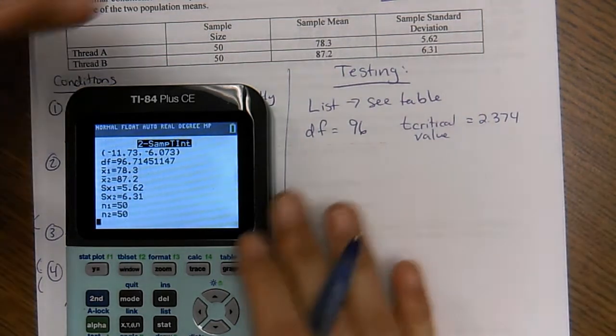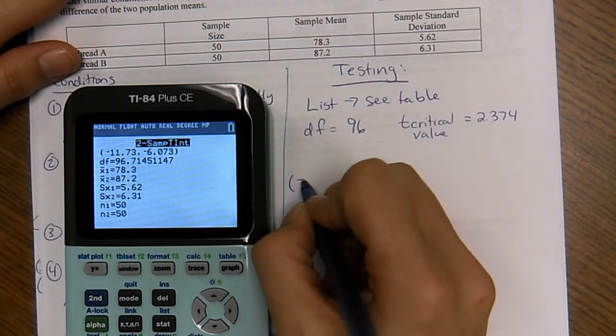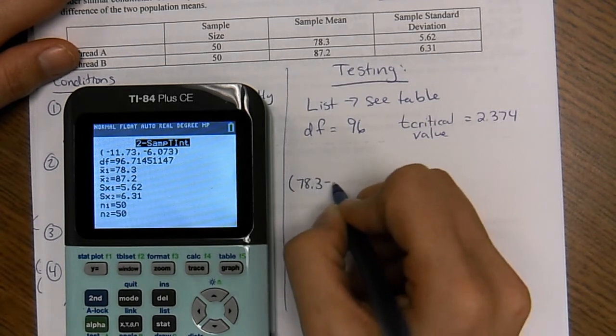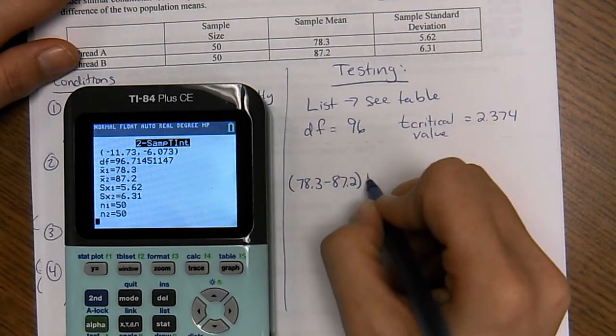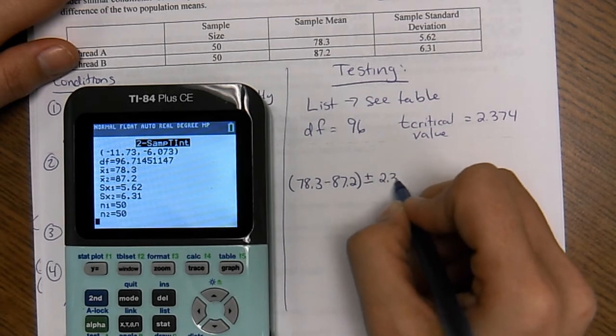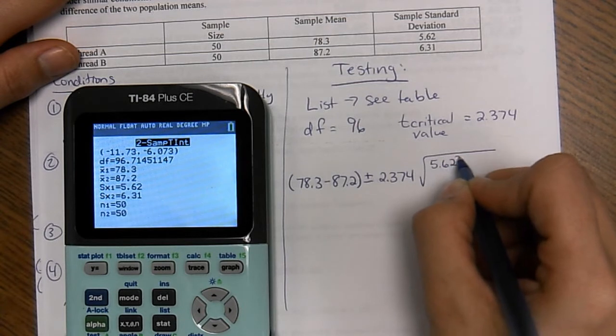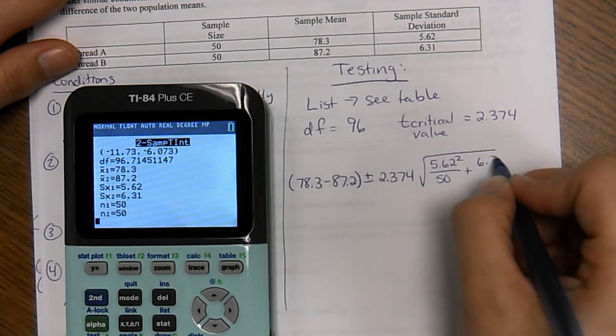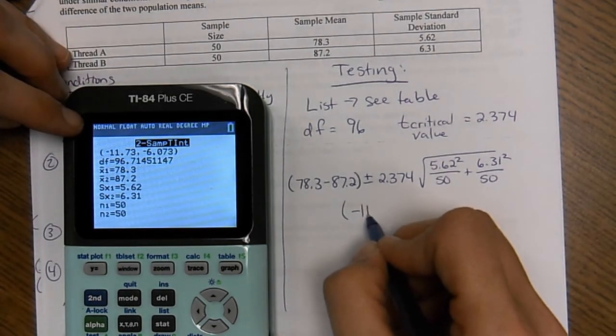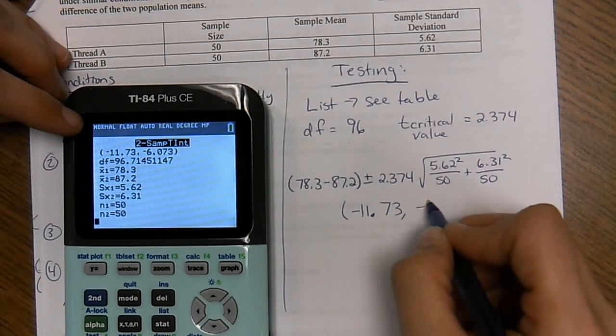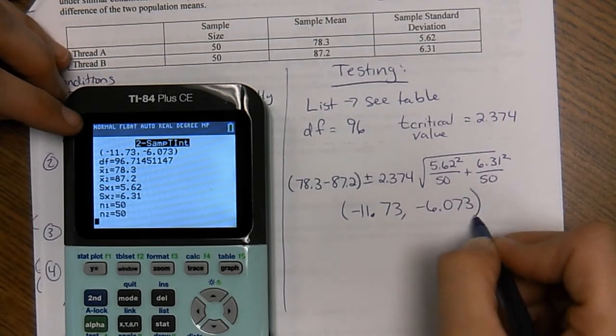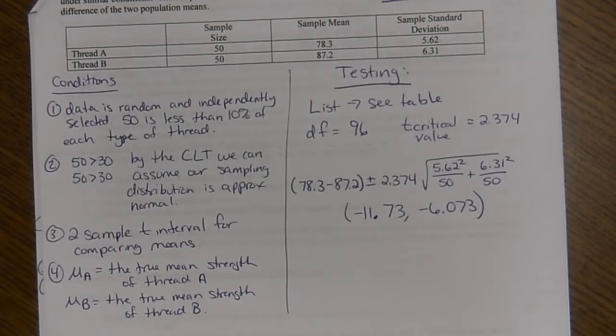So to find my T-critical value, I go to 98%. 96 is not on here, so I'm going to round down again to 80. So it's going to be 2.374. So there's no test statistic. I'm just going to write my formula. 78.3 minus 87.2 plus or minus 2.374 times the square root of 5.62 squared over 50, 6.31 squared over 50. And then this is my interval.